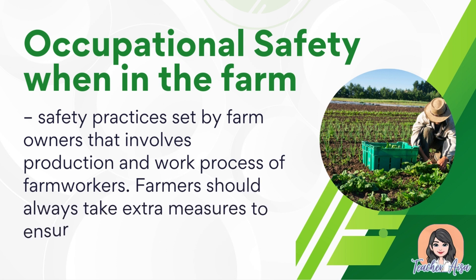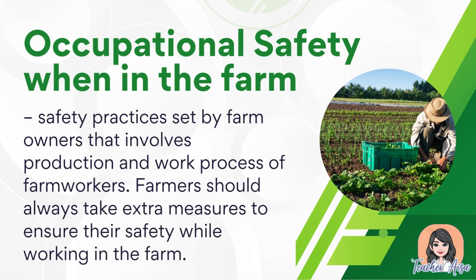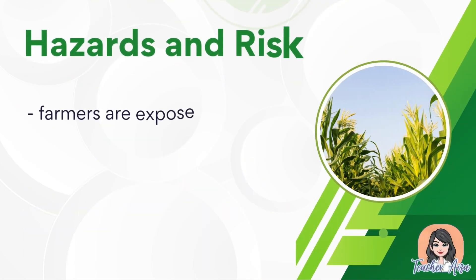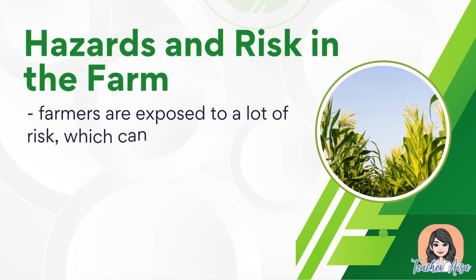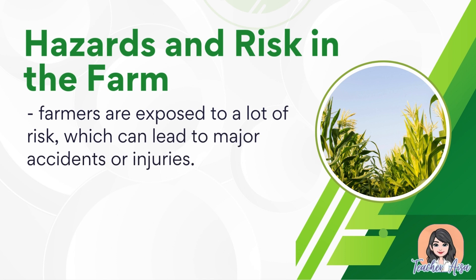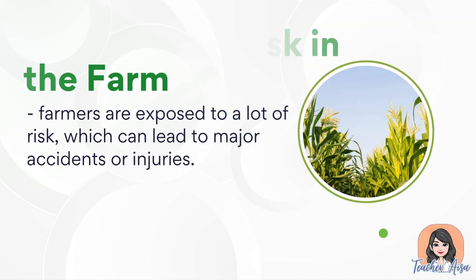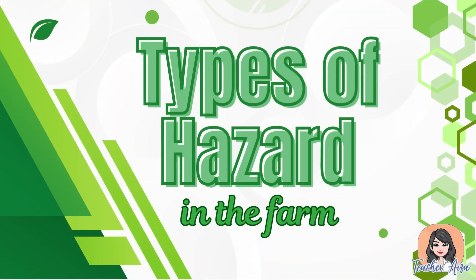Safety practices are set by farm owners and involve the production and work processes of farm workers. Farmers should always take extra measures to ensure their safety while working. Hazards and risks in the farm occur when farmers are exposed to risks that can lead to major accidents or injuries. Here are the types of hazards commonly encountered in the farm.